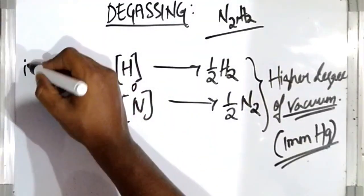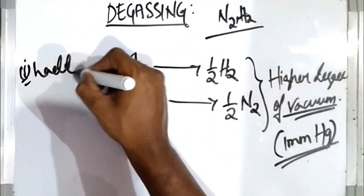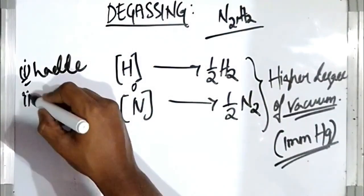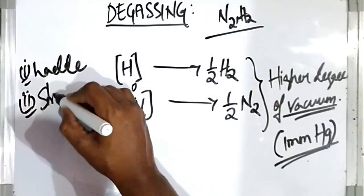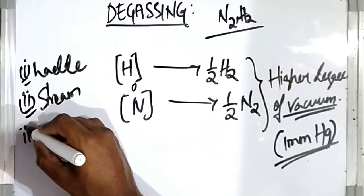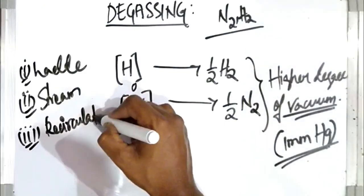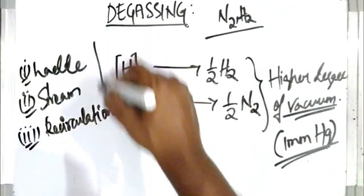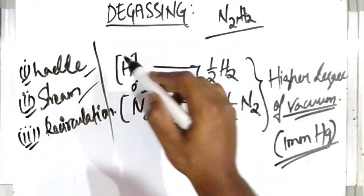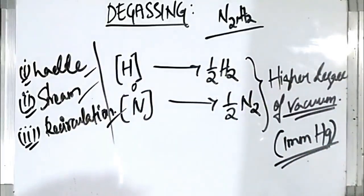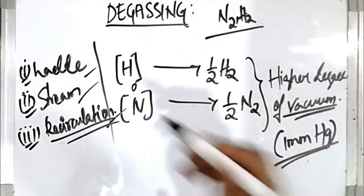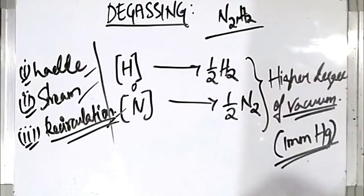There are generally three different methods of degassing. The first one is ladle degassing, the second is stream degassing, and the third is recirculation degassing. Recirculation degassing is the most important, but we'll be discussing all three types.